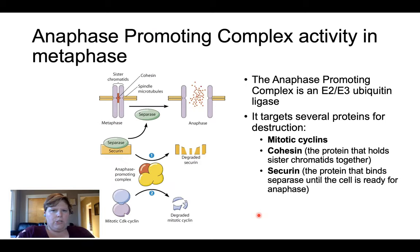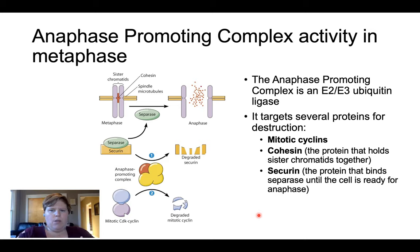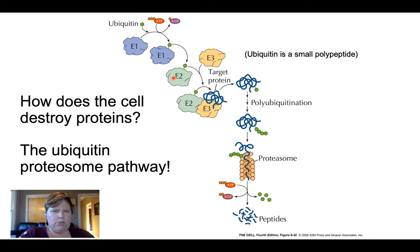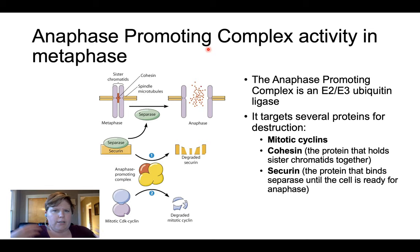Bringing it back to regulating the cell cycle: there's a complex called the anaphase-promoting complex. Once it's active, it's going to start anaphase. Some of the enzymes that are part of this complex are E2 and E3 ubiquitin ligases. The anaphase-promoting complex partly contains these two enzymes that add ubiquitin molecules to signal degradation. In order to promote anaphase, it needs to degrade a couple of different types of proteins.